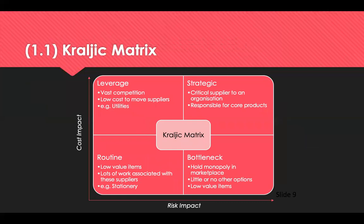The Krajlic matrix is used to assess the importance and risks associated with the procurements you're making. It determines how to manage supply relationships for direct procurements effectively. Direct procurements are usually supported by strategic or leveraged suppliers due to their importance and risk profile, and must be managed well. Indirect procurements of intangible services are likely to be sourced from a leverage or routine supplier. The relationship with these suppliers is not as strong as with strategic suppliers, and may involve simply paying for the service rather than establishing long-term working relationships.